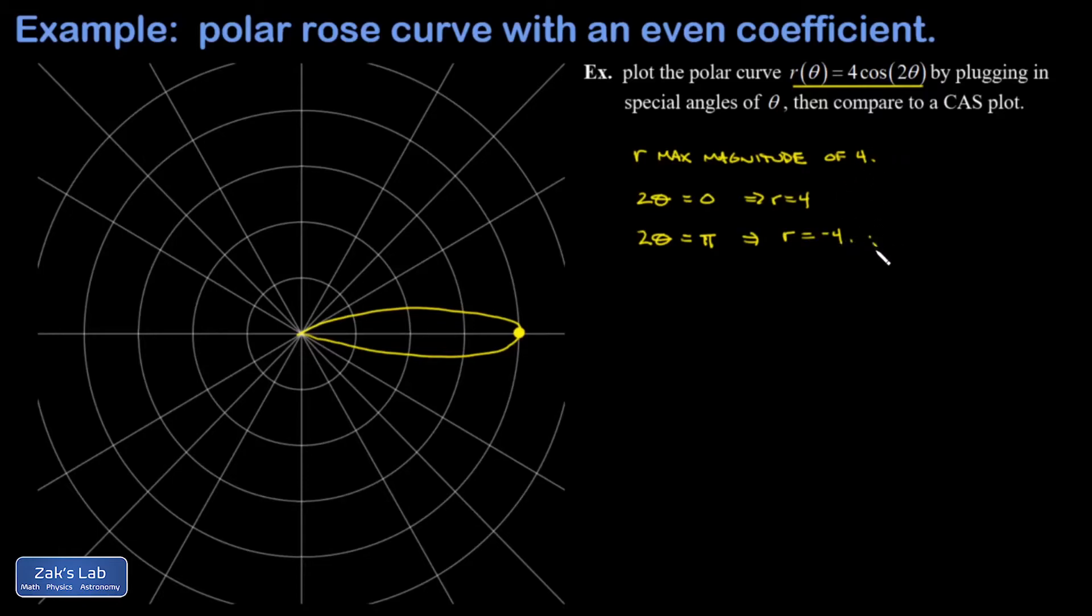I should also solve for θ so I can get my polar coordinates here, and θ is π/2. So when I aim straight up I'm going to walk backwards 4 steps and I get the tip of my next petal.